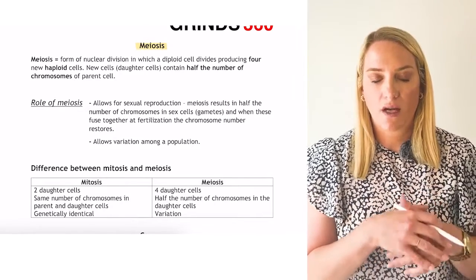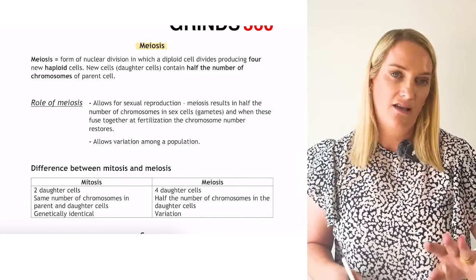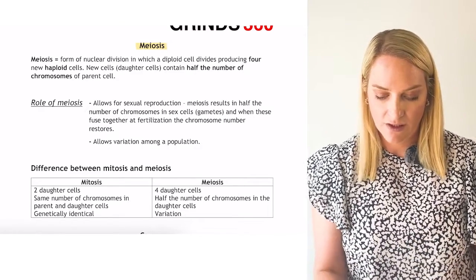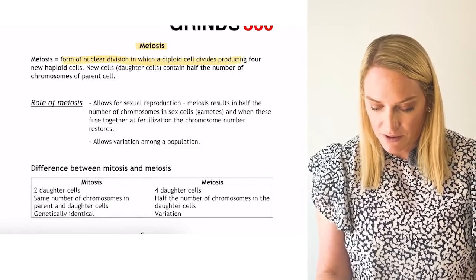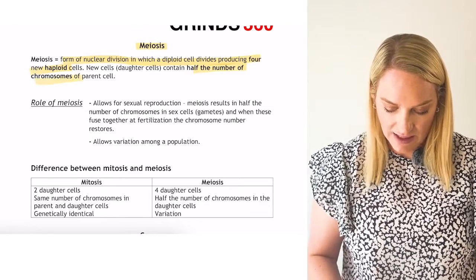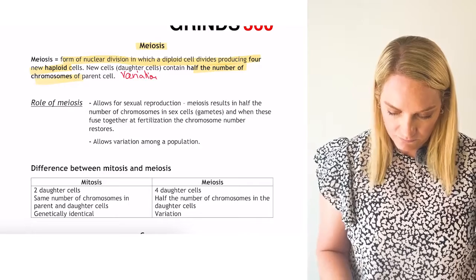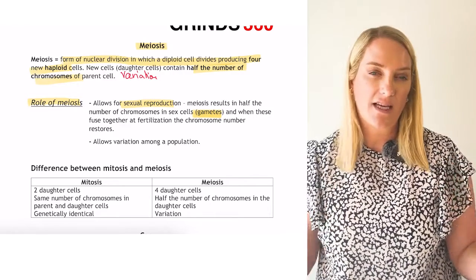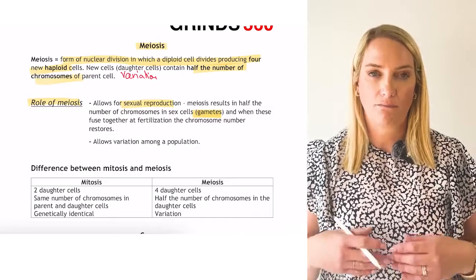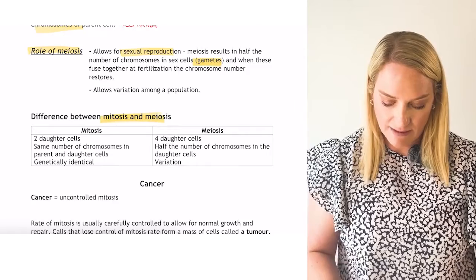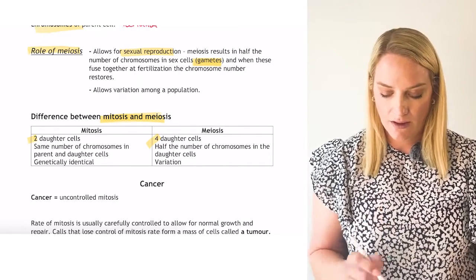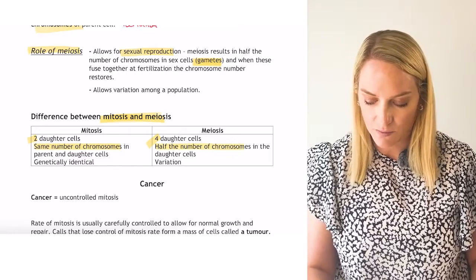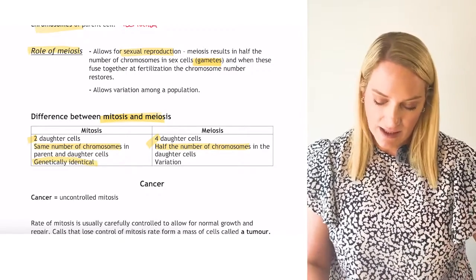Meiosis is a form of nuclear division where a diploid cell produces four haploid daughter cells, halving the number of chromosomes and bringing about variation. The role of meiosis is to allow sexual reproduction — it only occurs in gametes. Every other cell division in the body is mitosis. Comparing mitosis and meiosis: mitosis produces two daughter cells with the same chromosome number as the parent; meiosis produces four with half the number. In mitosis all cells are genetically identical; in meiosis variation is brought about.